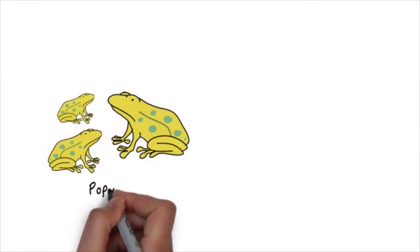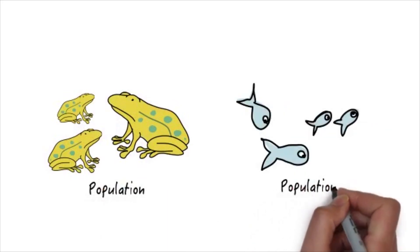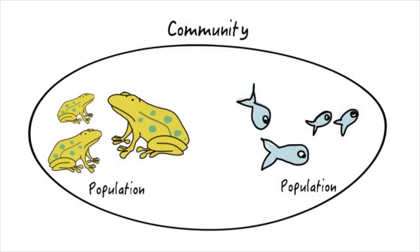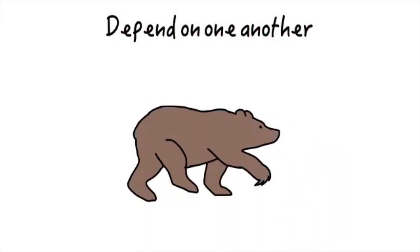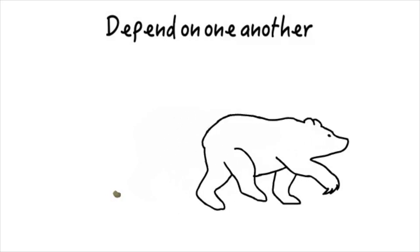There may be a frog population or a fish population. Together, they form a community. Living things of an ecosystem depend on one another. For example, bears eat fruits to gain energy. Once they are done digesting the fruit, they drop the fruit seeds into the soil after excretion.